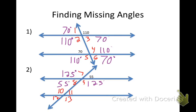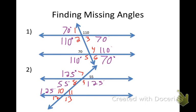What about angle 10? How would I find angle 10? It's 125. Why? What are angles 7 and 10? Those are corresponding angles. What about angle 11? Corresponding angles.